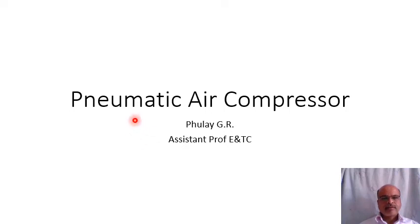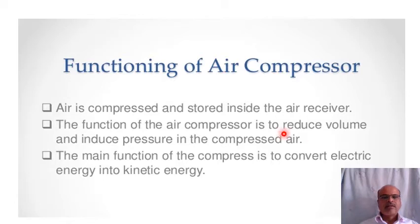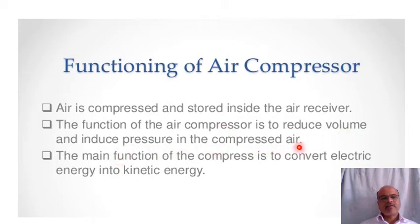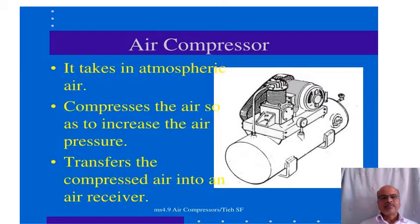In this lecture we will take pneumatic air compressor. The function of an air compressor is that air is compressed and stored inside the air receiver. The function of an air compressor is to reduce the volume and increase the pressure of compressed air. The main function is to convert electric energy to kinetic energy. It takes atmospheric air, compresses it to increase the pressure, and transfers the compressed air into an air receiver.